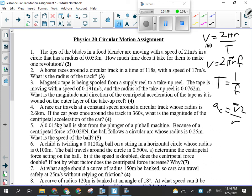Number three, you got your magnetic tape being spooled from a supply reel to a take-up reel, so one reel to another. Tape's moving at 0.191 meters per second, and the radius is 0.0762.